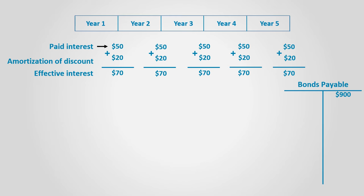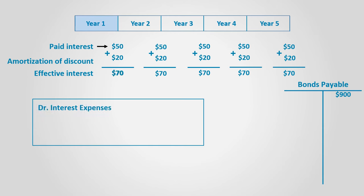So even though the business is paying $50 in cash, it will affect its expenses by the additional $20 as well. The effective interest is equal to the $50 which is paid plus the $20 which is going to be paid later, so it is equal to $70. The journal entry would be: debit interest expense for $70, credit cash for $50, and credit bonds payable for $20.